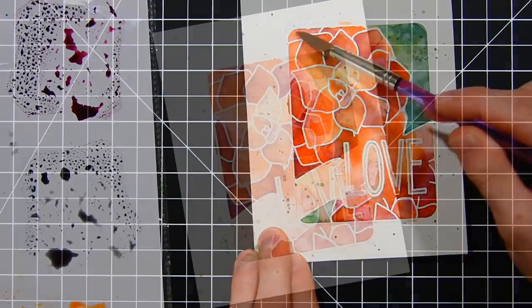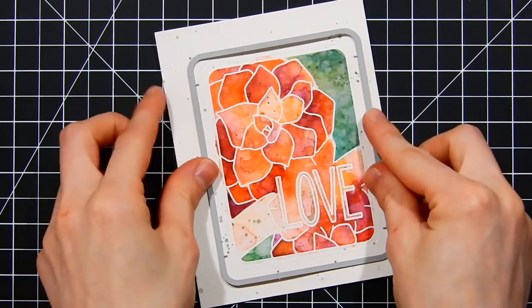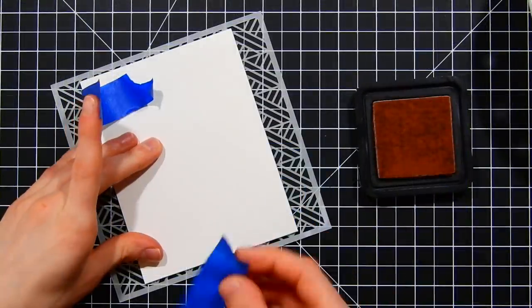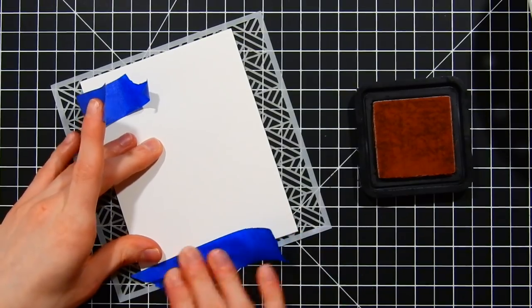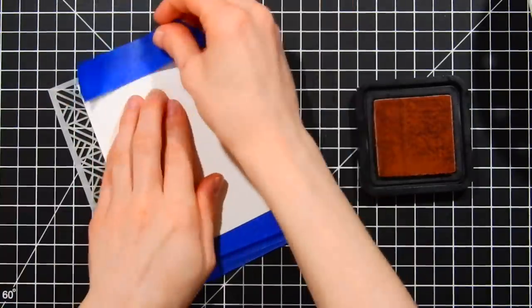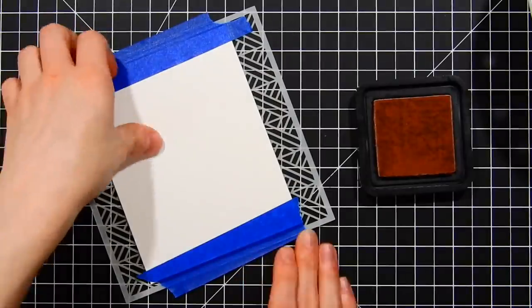So here's the finished panel. I'm going to die cut this using the coordinating frame die that goes with the succulents journaling card die set. I'll run this through my Big Shot machine. I'm now taking an ivory cardstock card base that I've created using some Simon Says stamp cardstock. I'm going to apply a new stencil from Neat and Tangled over top of the card and I'm going to start applying some ink using a brush.